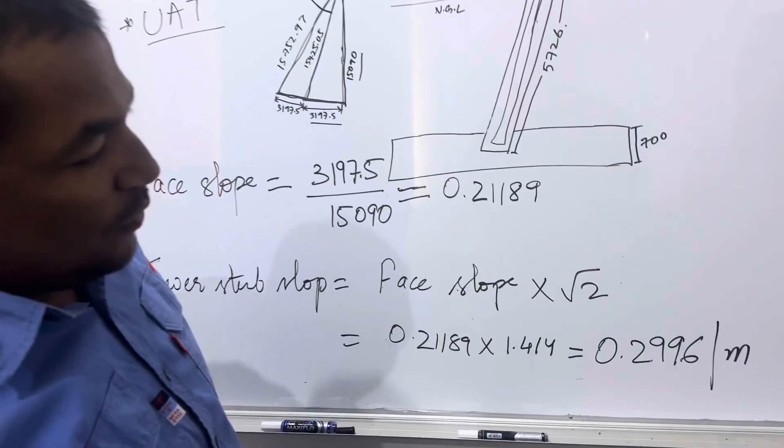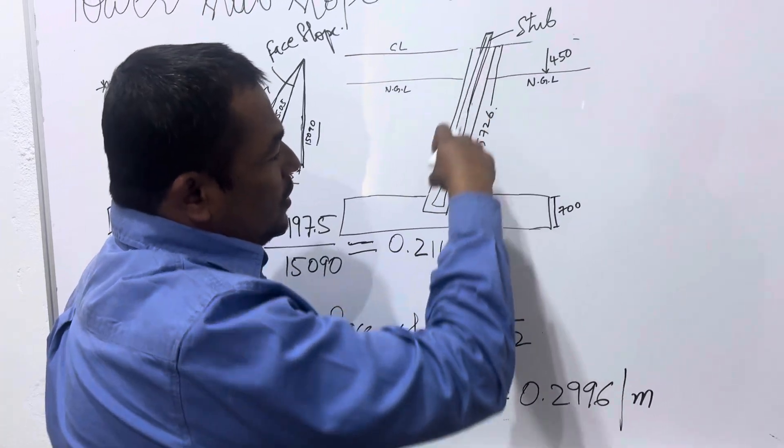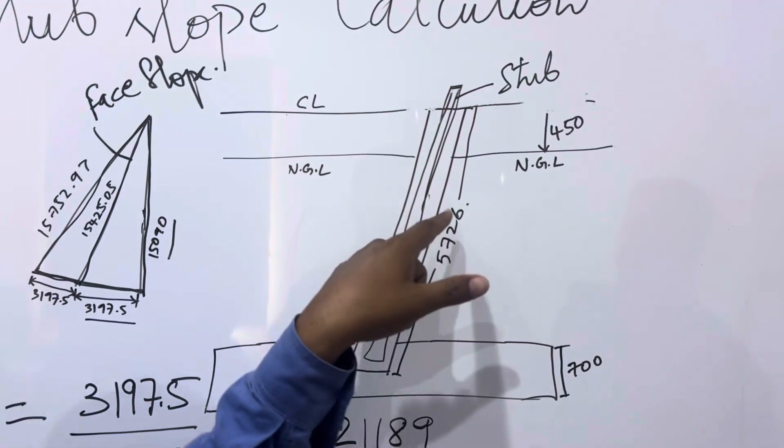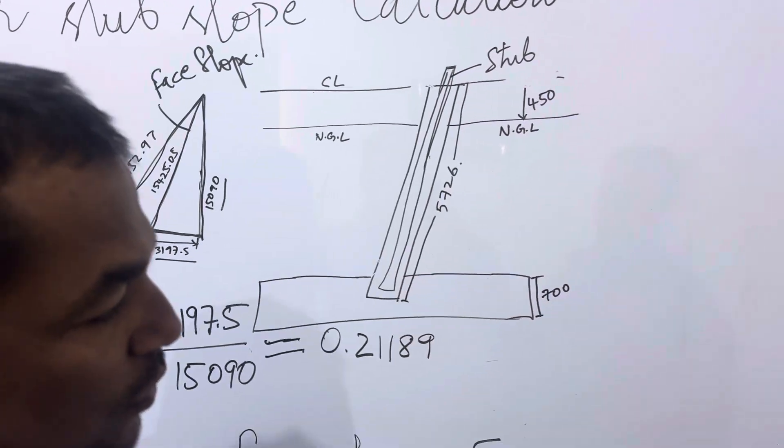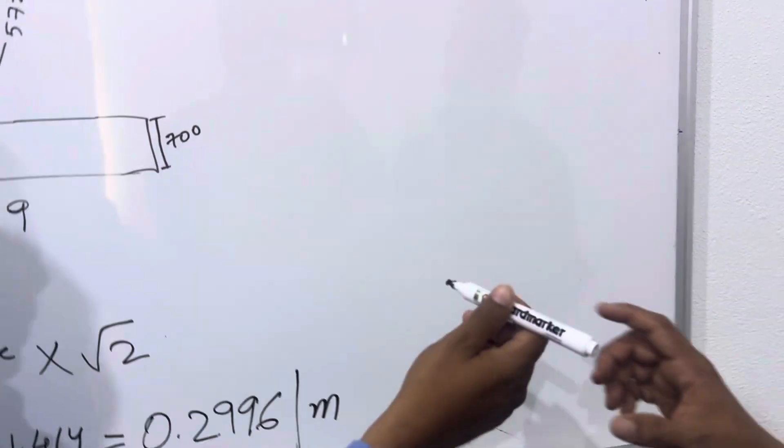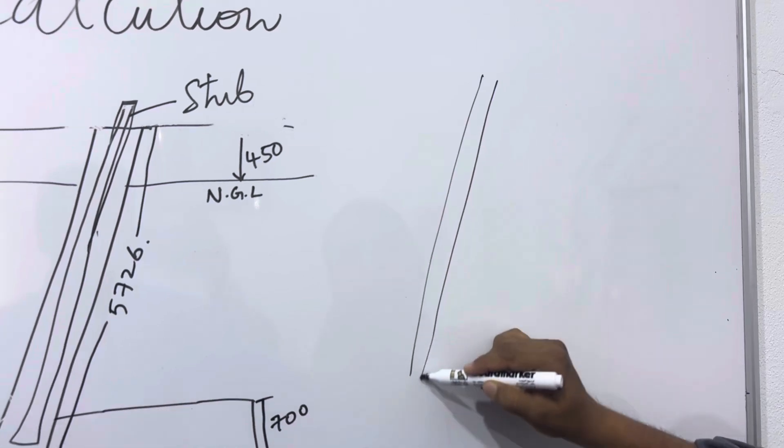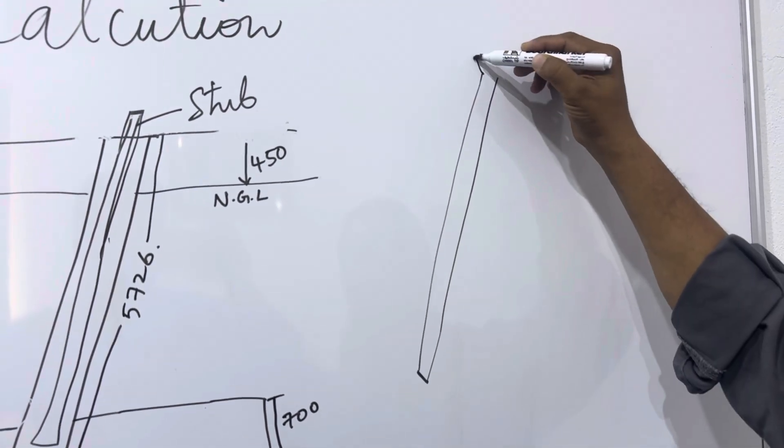So at site what we have to do, installation of this stub and again checking the slope, it is difficult. So what we have to do we have to mark on the ground, there is a stub on the ground, you should take this stub.